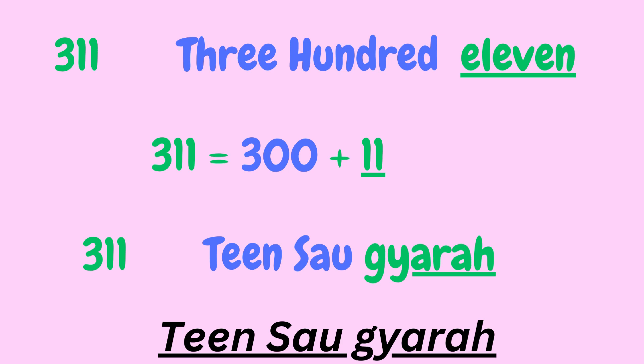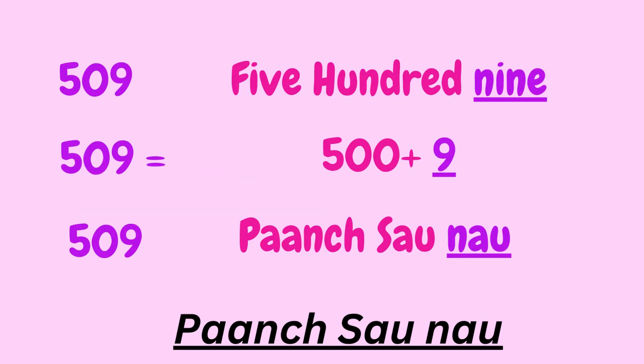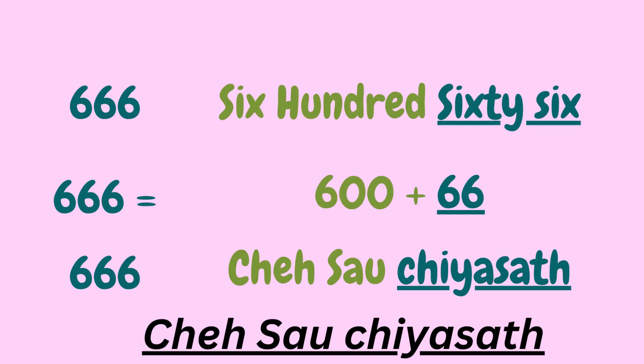Let's take the number 485 — that is 400 plus 85. 400 is 'chaar saw' in Hindi and 85 is known as 'pachasi', so it becomes 'chaar saw pachasi'. Let's take 509 — that is 500 plus 9. The Hindi equivalent of 500 is 'paach saw' and 9 is 'nao', so it becomes 'paach saw nao'. Let's take 666 — that is 600 plus 66. The equivalent of 600 is 'chha saw' and 66 is 'chiasat', so it becomes 'chha saw chiasat'.